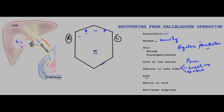Regarding diet: the gallbladder normally concentrates and stores bile and squirts it when needed. When the gallbladder is gone, some patients may find that fatty food causes diarrhea. To avoid this, it is important that patients take a low-fat diet at least for the first few days, with smaller meals and more fiber.